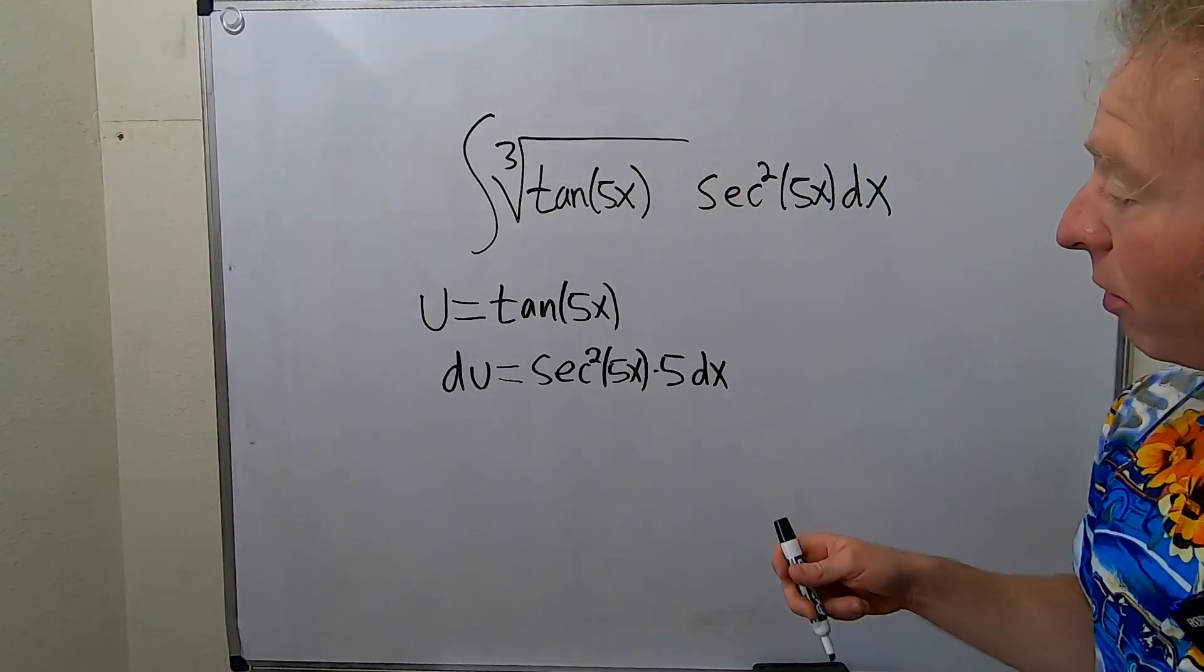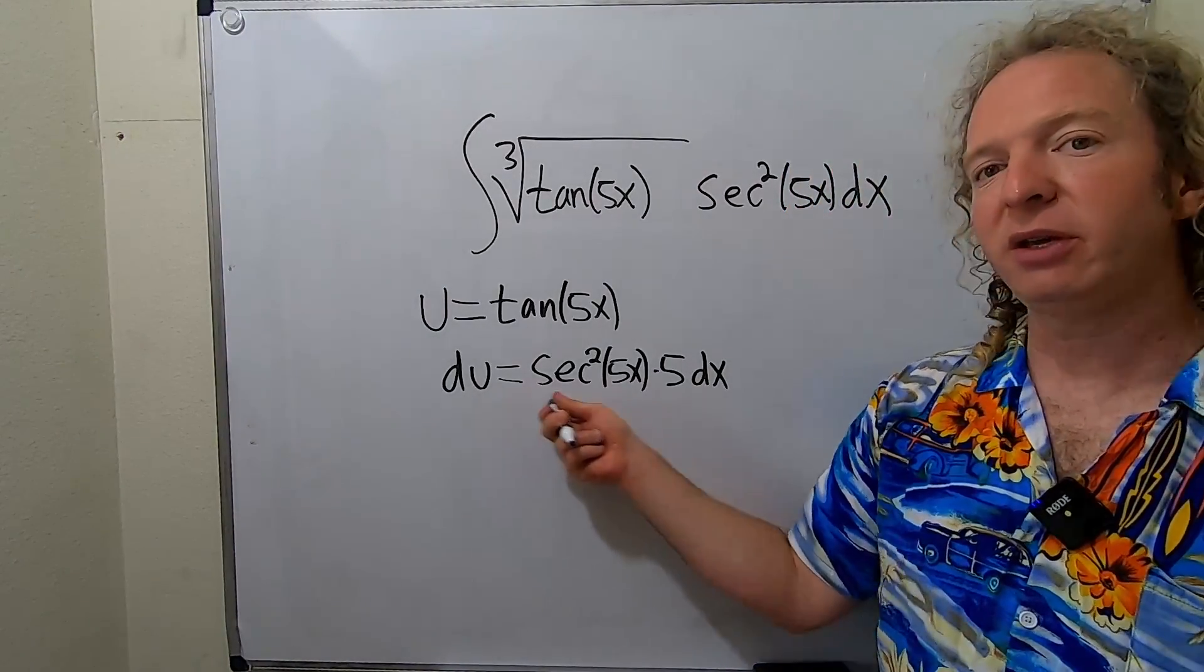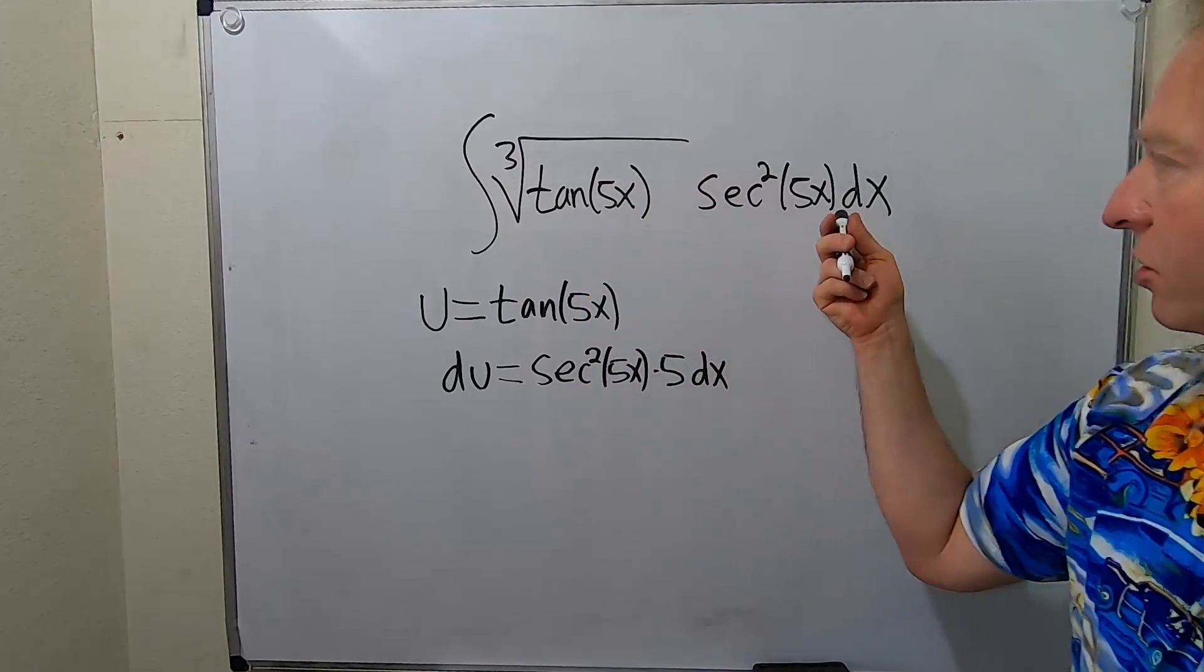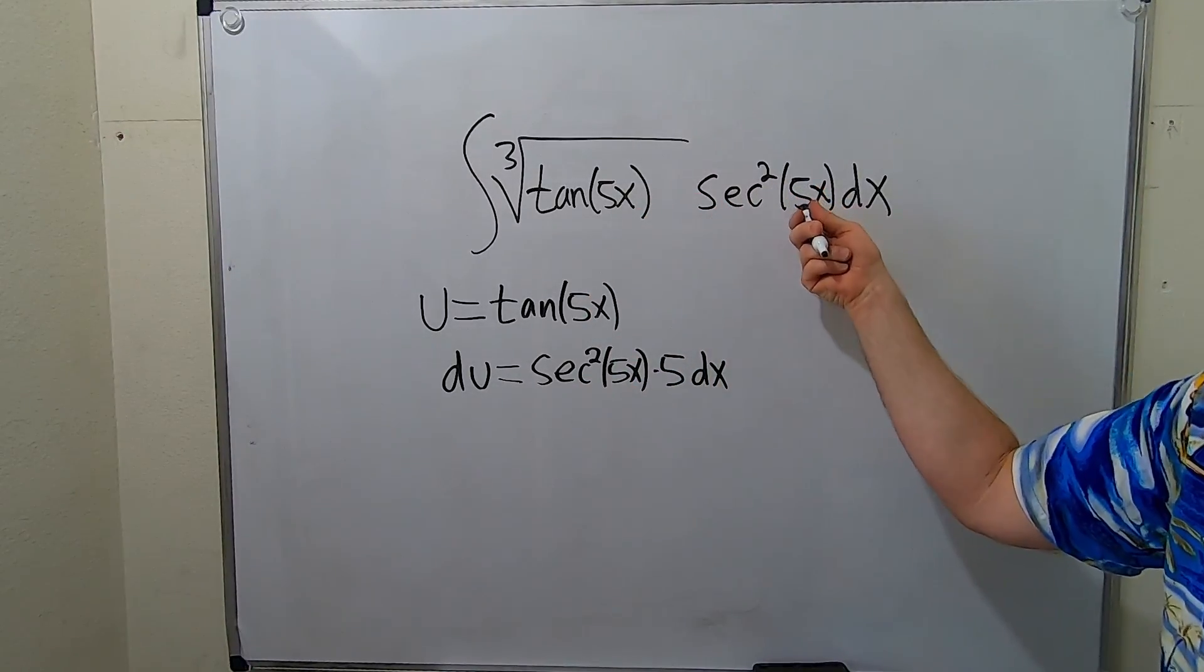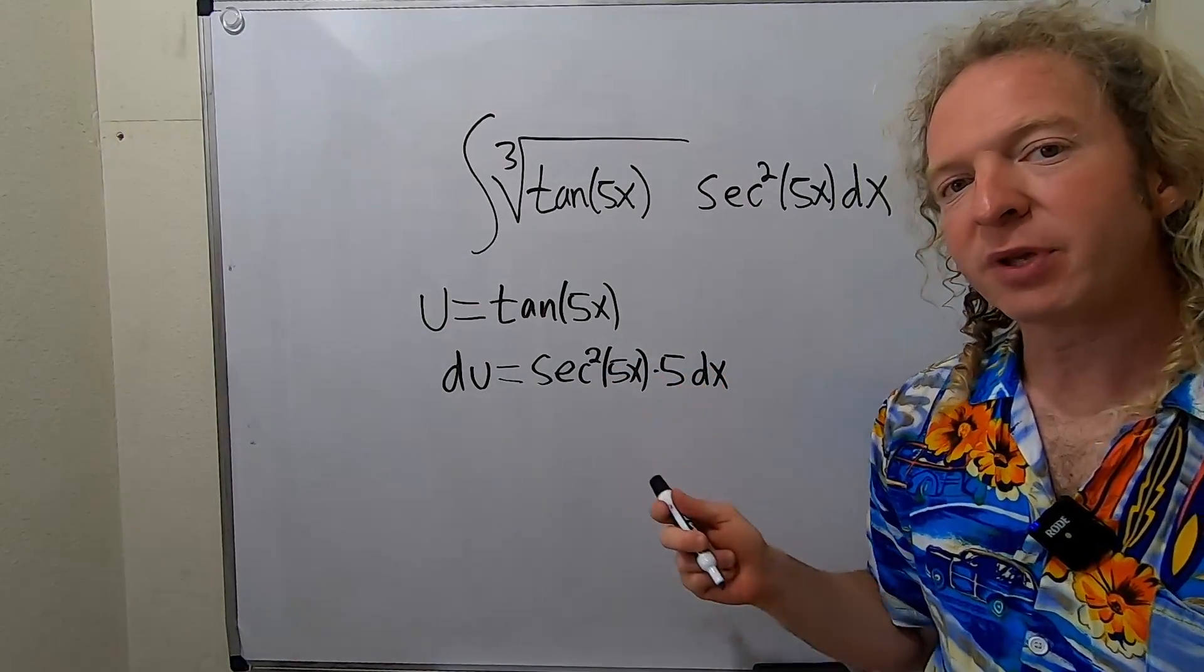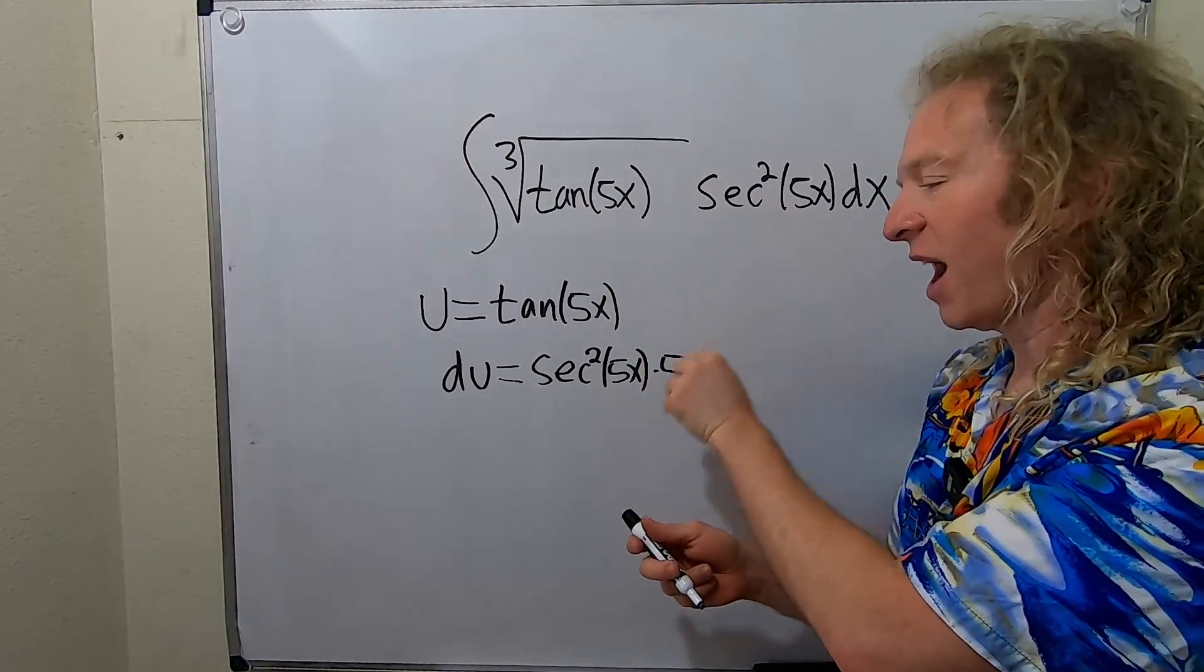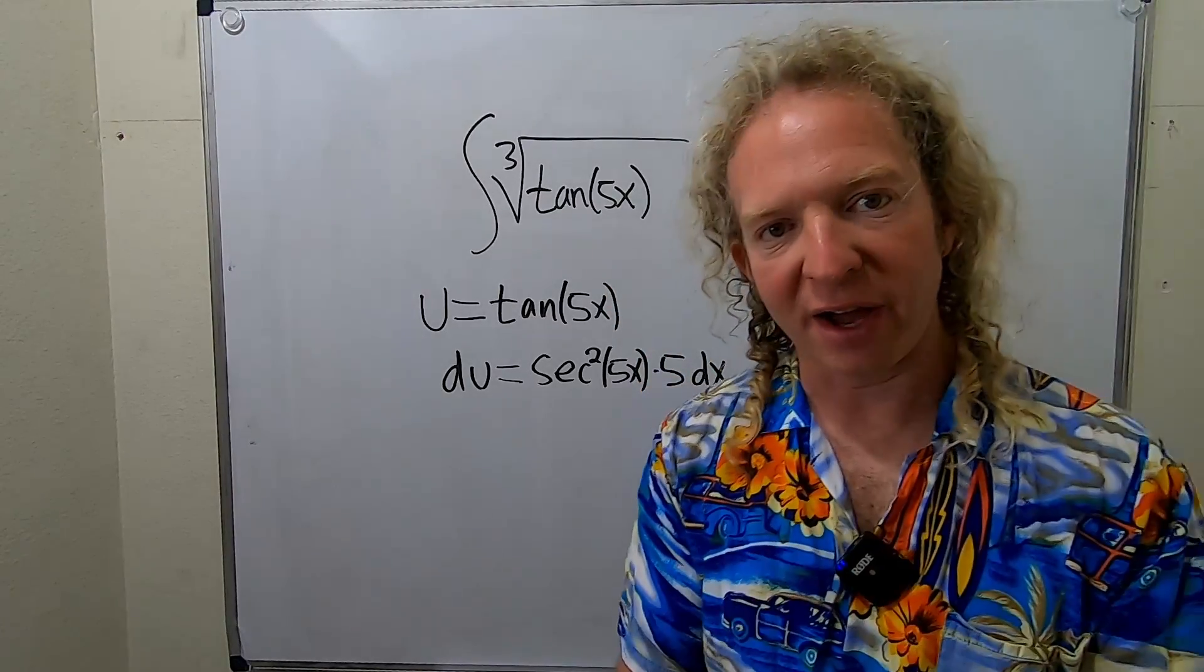Okay, we're almost there. So now our goal is to make whatever we have here look like what's in the integral. So we have the secant squared 5x dx. We have that here. But we have an extra 5. So what we do now is we make this look like this. In other words, we have to get rid of the 5.